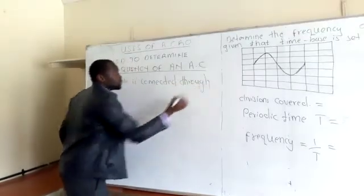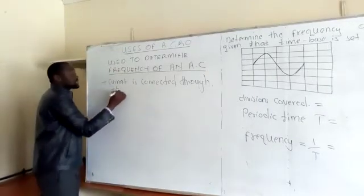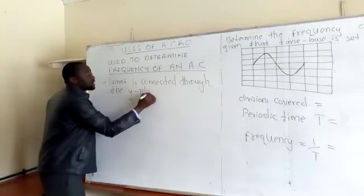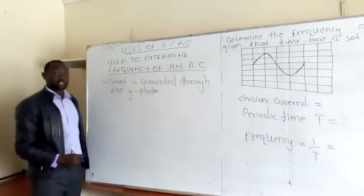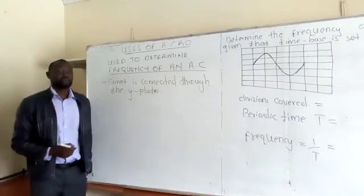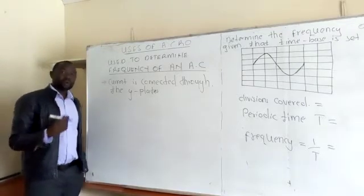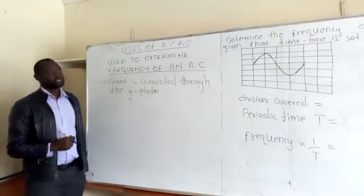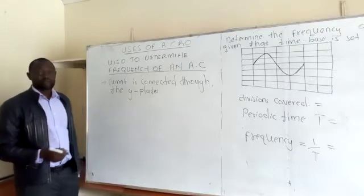We connect the signal through the Y plates, just as we did when we were determining the voltage — the input was through the Y plates. The difference is that when determining the voltage we switched off the time base and added the X plates.